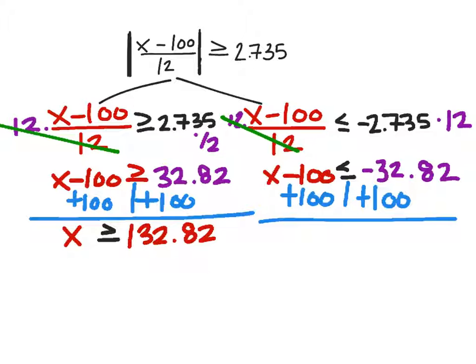On the other hand, over here, we got negative 32.82 plus 100. That's going to be a little bit different. So now I got 67.18. So x is less than or equal to 67.18, and x is also greater than or equal to 132.82.